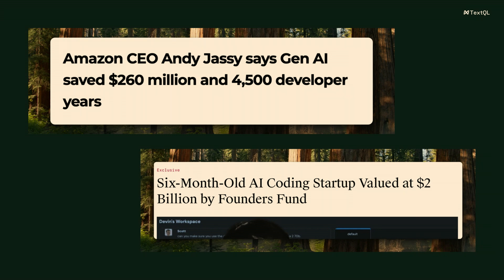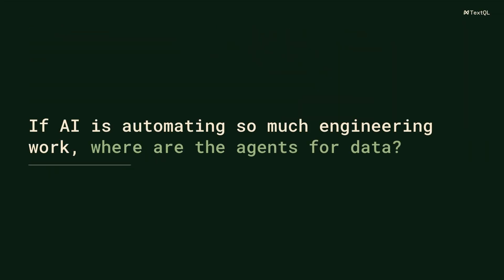Gen AI for automating developer and analyst workflows is probably one of the most hyped use cases out there. Amazon CEO Andy Jassy says he saved 4,500 developer hours with gen AI, and there are tons of startups raising a ton of funding around this use case. So if this is so promising for software developers, where are the agents for data analysis? When I talk to people, lots of them say data analysis is just some SQL and Python — it must be so much easier to automate. But in practice, we found the opposite is true.